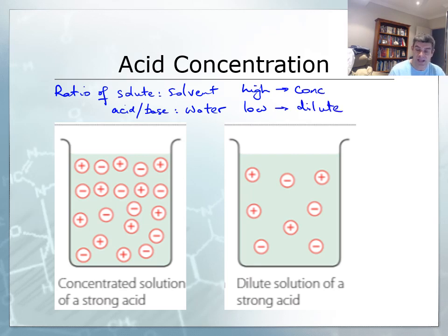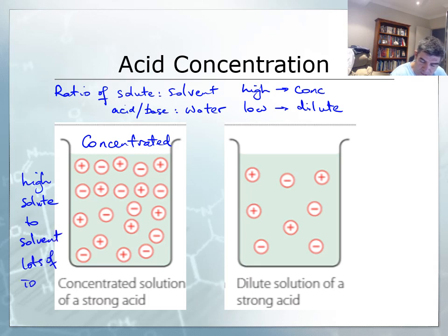So in the first case here, you can see this is a concentrated solution. We're not worried here about whether there's a lot of molecules or ions. That's not relevant to our discussion. What we can see is there's lots of ions. So there's high solute to solvent. Lots of ions. So in this case, because we have lots of them there, despite the fact that we have no molecules and therefore we would describe this as a strong acid. We would also describe it as concentrated because there's lots of ions in this solution.